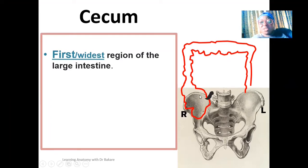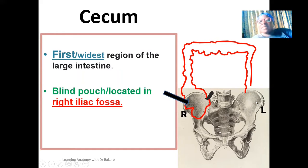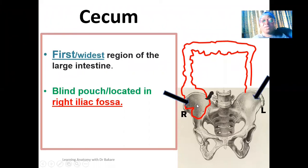It is the widest region of the large intestine, and this is the cecum arrowed in black. The cecum is a blind pouch that is located in the right iliac fossa. This is the configuration of the pelvic bone — this is the right side and this is the left side. This is the iliac fossa highlighted here, which is the fossa created on the anterior part of the ilium. The ilium is one of the subdivisions of the pelvic bone, and on the right side is where we have the location of the cecum. This is where it begins from, and it is placed in the right iliac fossa.